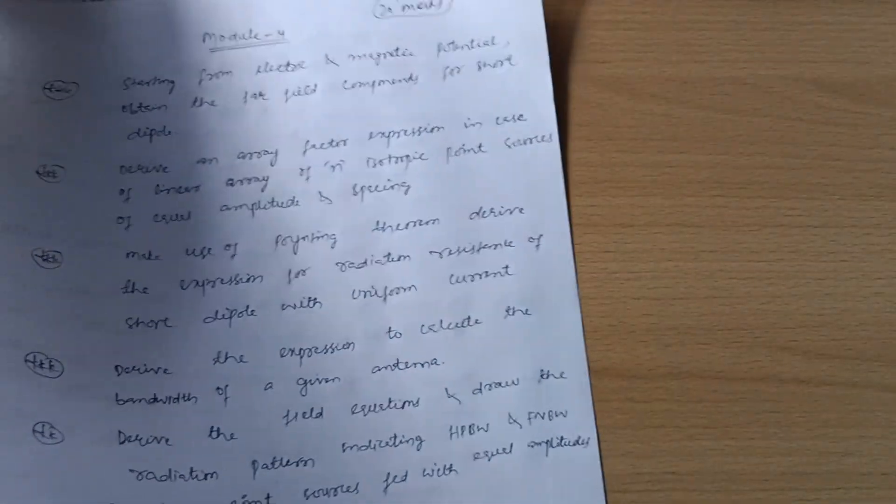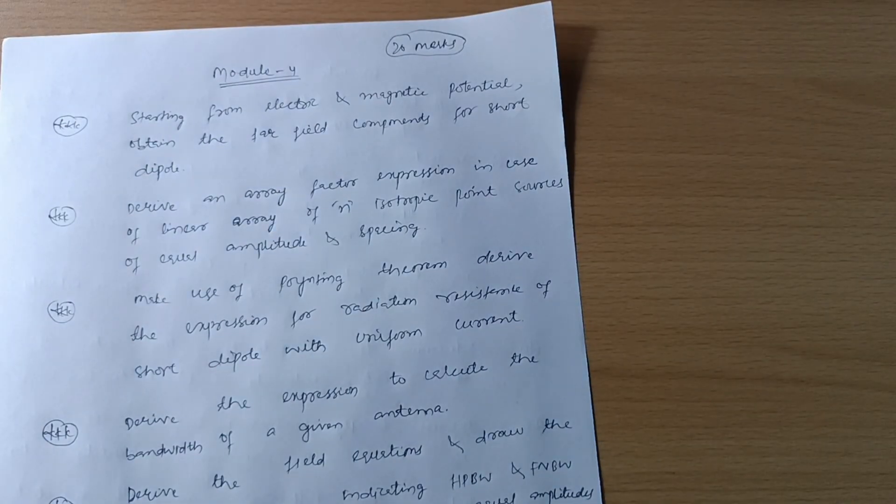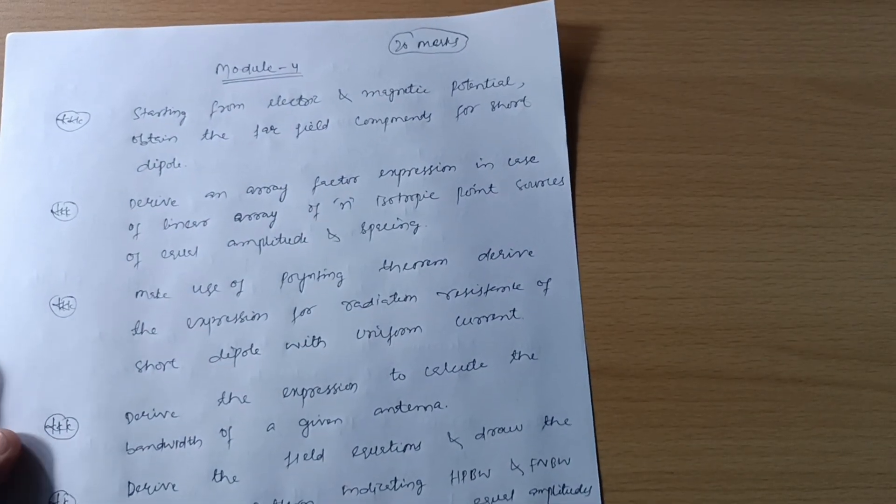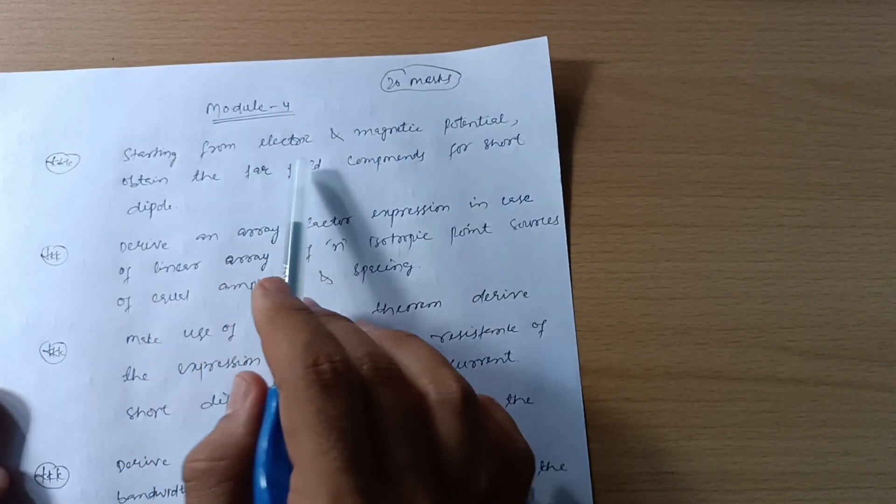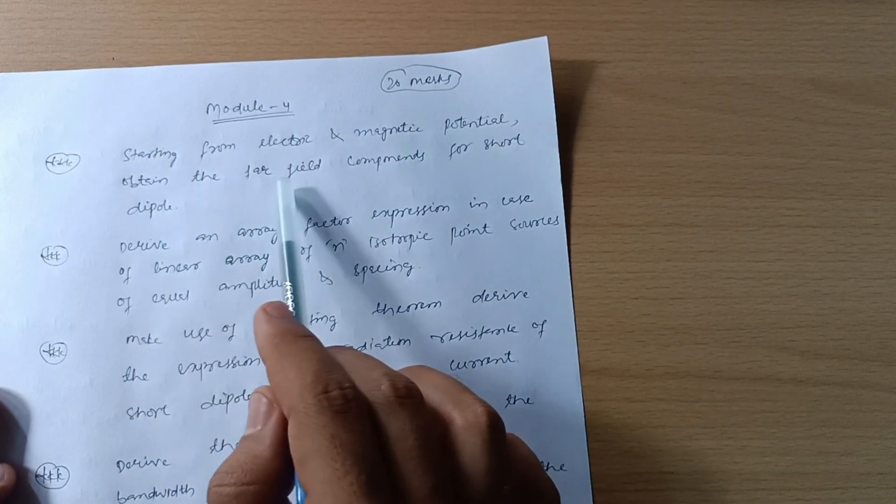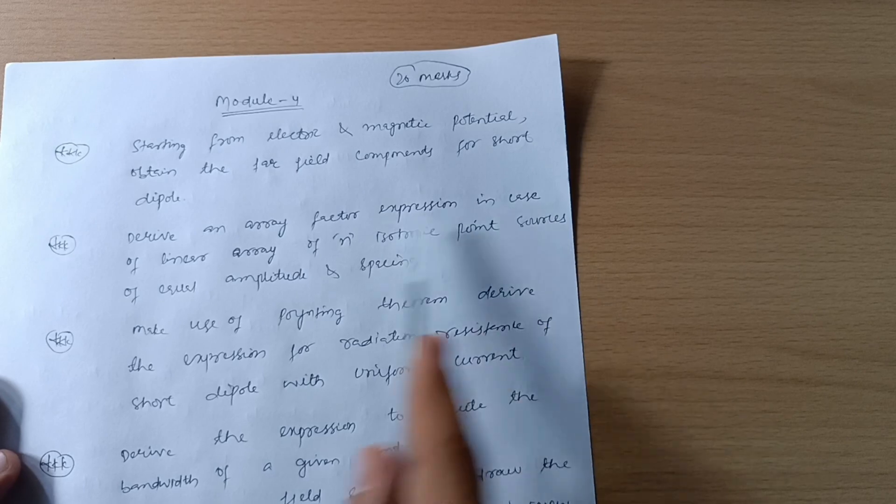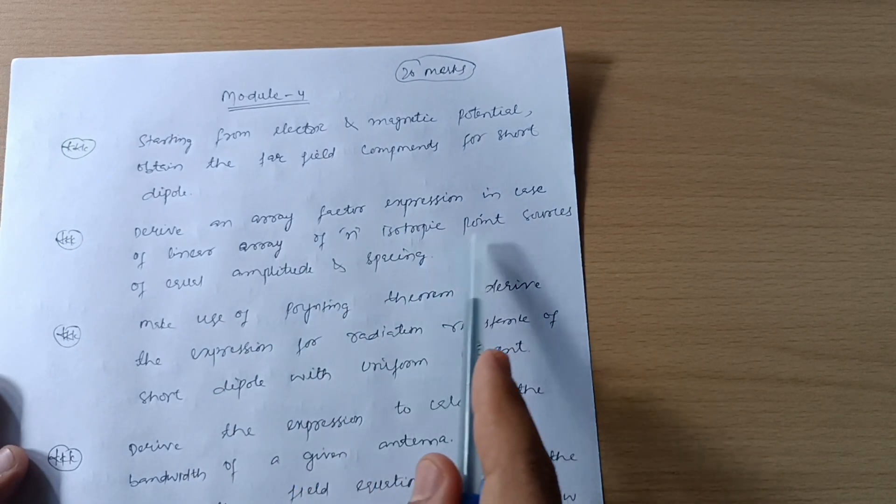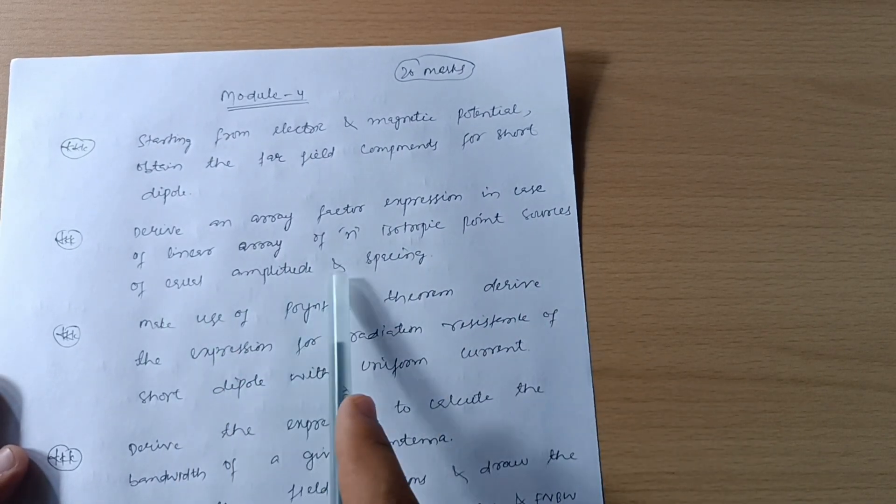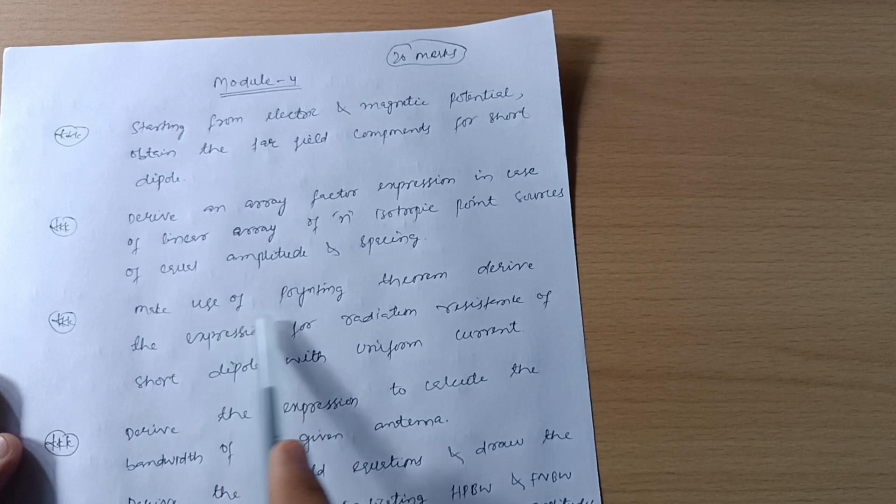Now let's move to Model 4. These 20 marks you can easily grab if you cover these six questions starting from: electric and magnetic potential, obtain the far field components for short dipole. Derive an array factor expression in case of linear array of n isotropic point sources of equal amplitude and spacing.